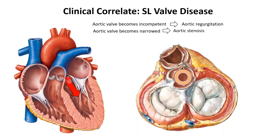The same is true for the pulmonary valve: if it became incompetent it would result in pulmonary regurgitation; if it became narrowed it would result in pulmonary stenosis. Usually when you have a valvular disease, on cardiovascular examination you will be able to hear an abnormal sound called a murmur on auscultation.